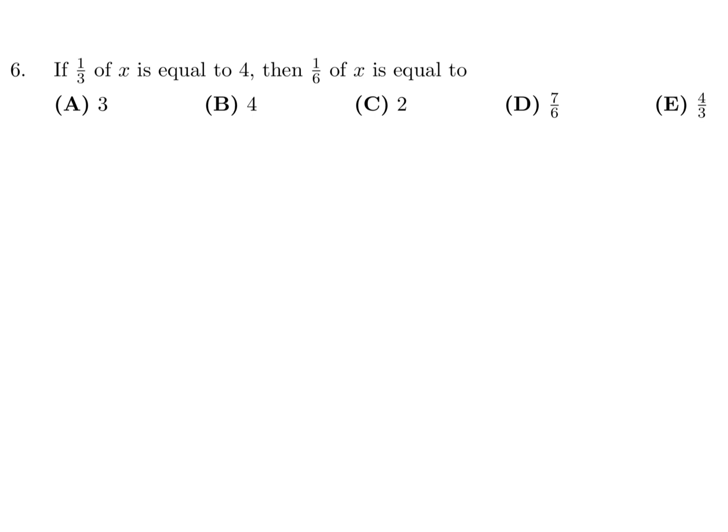If 1 over 3 of x is equal to 4, then 1 over 6 of x is equal to... So if a third of x is equal to 4, that means x is equal to 12. So then they're saying what is 1 sixth of it? Well that'd be 12 over 6, and that is 2. So number 6, the answer is C.